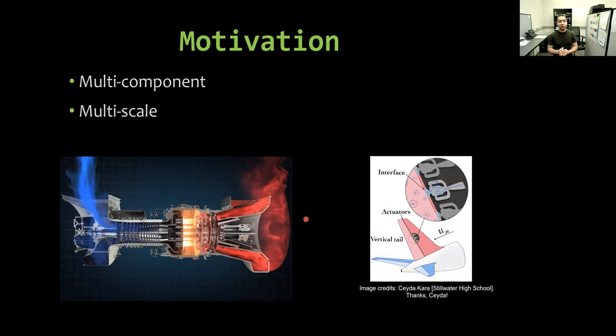The exit of the compressor represents the inlet boundary condition for the burner, and the exit of the burner is the inlet to the turbine section. In this example, we have some physical interfaces or boundaries between different components. The system also might have different length scales or spatial scales, and so we need to use different solvers with different resolution.